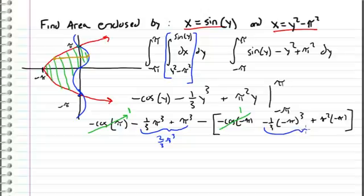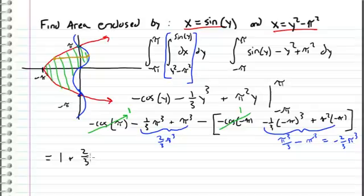Over here we get a positive pi cubed over three minus a pi cubed, so this evaluates to negative two thirds pi cubed. Let's write this in simplified form: we get one plus two thirds pi cubed minus one plus two thirds pi cubed.